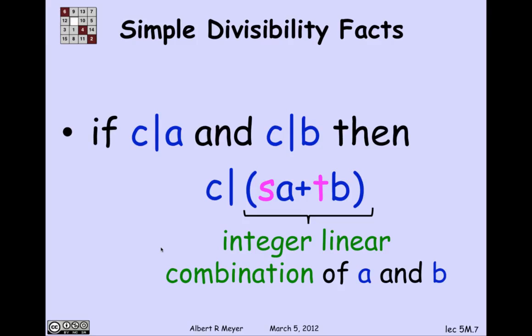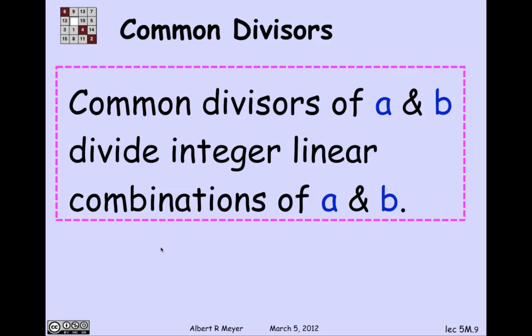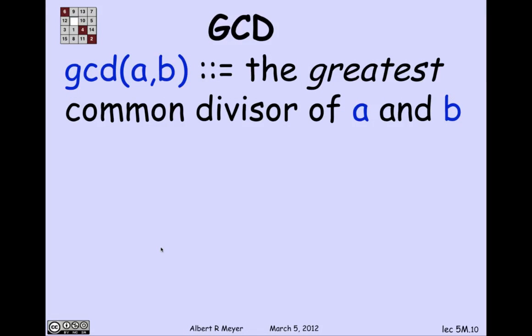So we've just figured out that if C divides A and C divides B, then C divides an integer linear combination of them. When C divides two numbers, it's called a common divisor of those two numbers. So we could rephrase this observation by saying common divisors of A and B divide integer linear combinations of A and B, which is a good fact to just file away in your head.